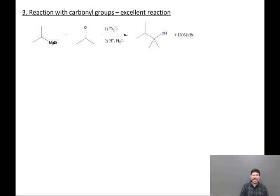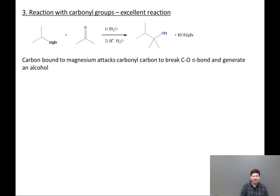A truly excellent reaction is the reaction of Grignard reagents with carbonyl groups. We're going to take isopropylmagnesium bromide and react it with acetone in ether as the solvent. Then after the reaction has gone to completion, we add a proton source in the aqueous workup, H⁺ and H₂O. The product now is a six-carbon tertiary alcohol. Mechanistically, the carbon bound to magnesium attacks the carbonyl carbon. This will break the C=O π bond and generate an alcohol. The ketone-derived pieces are in blue, the Grignard-derived pieces are in purple, and the new carbon-carbon bond is in red.